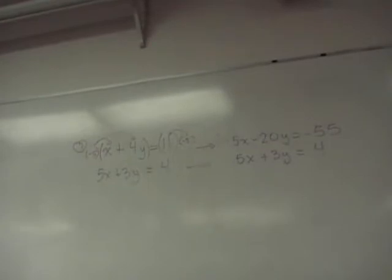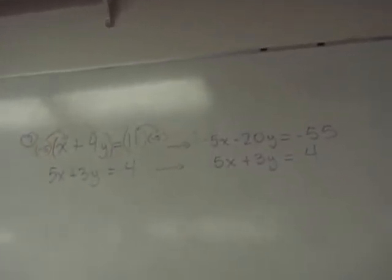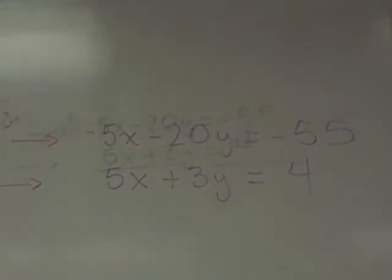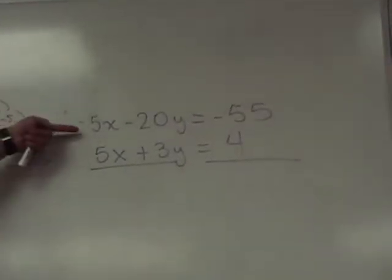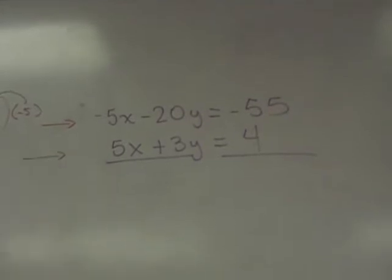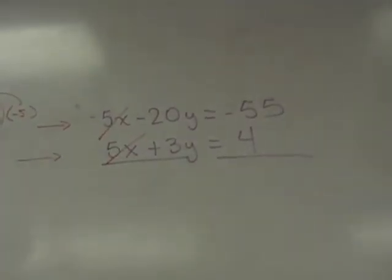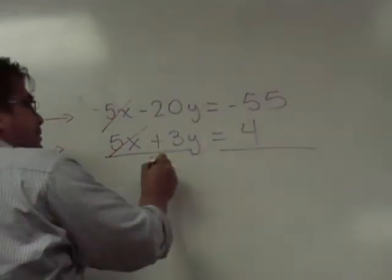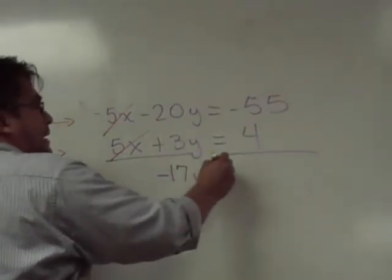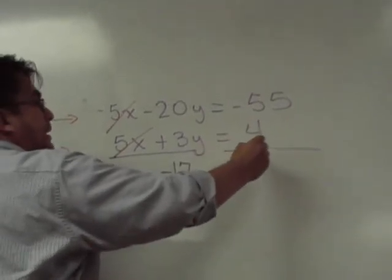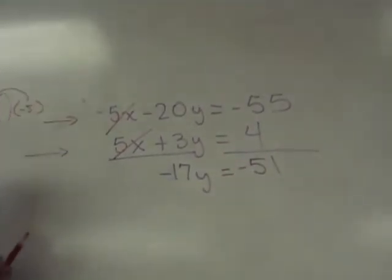Now, you go ahead and add those out. Add the two equations and see what you end up. See if you can solve for the variable that remains. Let's check then. When we add the equations negative five x plus five x? Cancel. They cancel each other. Zero. Gone. So, they're gone. Negative twenty plus three? Negative seventeen. This would be negative seventeen y. And negative fifty five plus four? Negative fifty one.